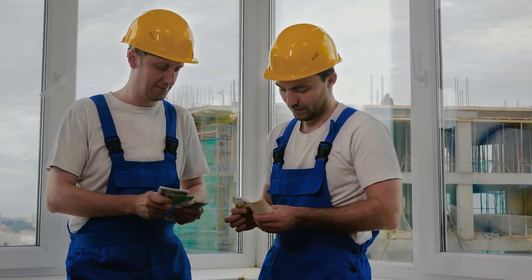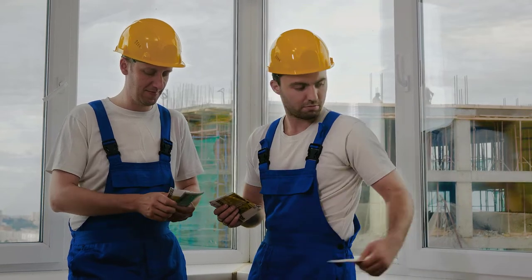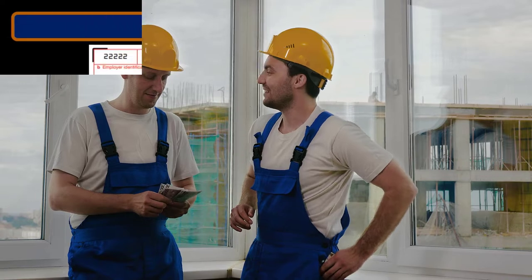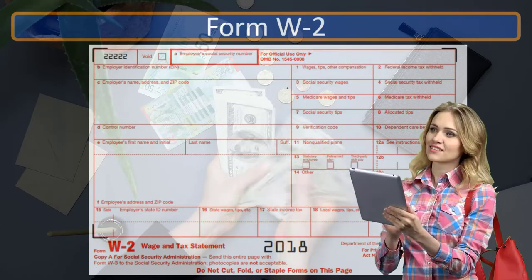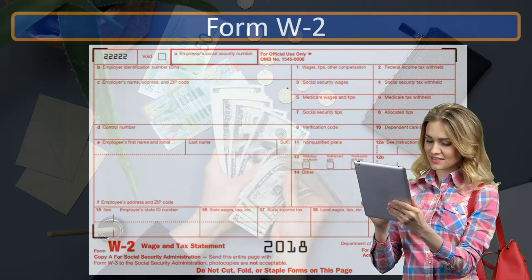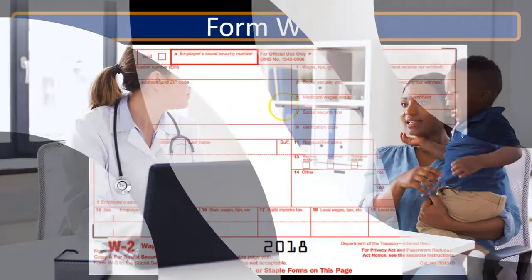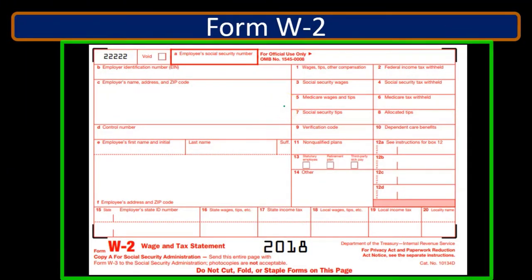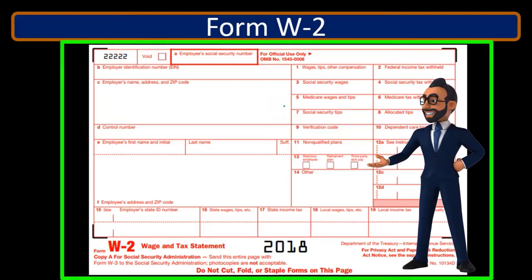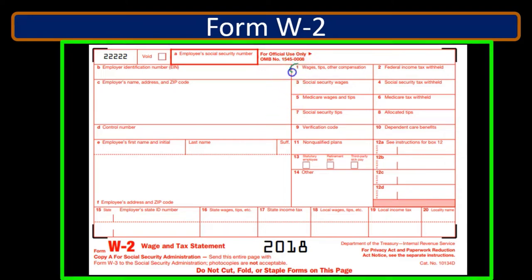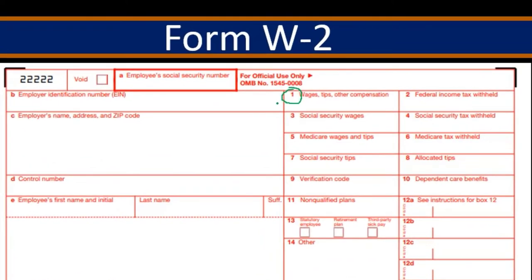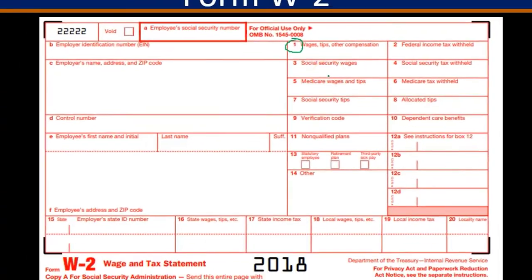Social security wages may not accurately reflect total earnings either, because there is a cap. We don't pay social security taxes above that cap, so if someone earned over a certain amount, the social security wages would be capped at that figure. Medicare may actually be the most accurate wage calculation on the W-2. There's no cap on Medicare and no deductions like the 401(k) deduction that apply to Line 1. We pay Medicare on all wages, so Medicare wages often represent the highest and most complete number.